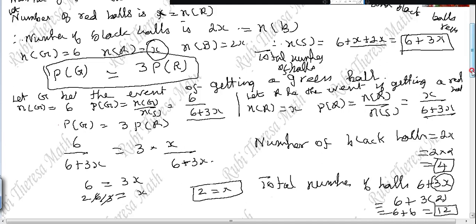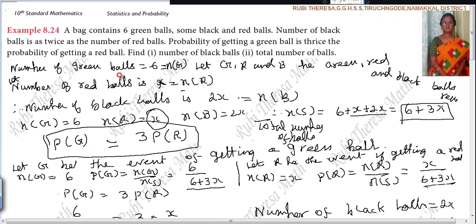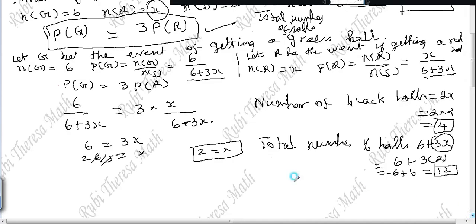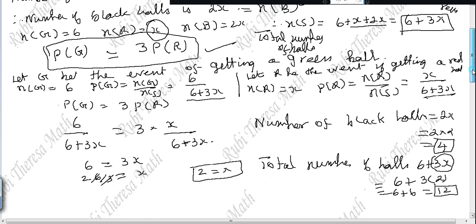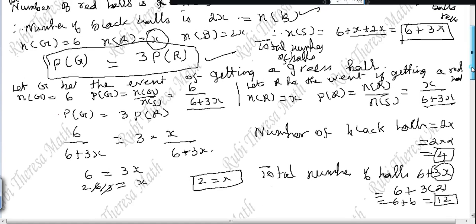Understand? Do you follow, everyone? I'm giving this in detail, but you can write it more concisely. Use the first steps and the given condition, and directly write the probability to solve the problem. According to your convenience, complete it within the time limit. Is it okay? Thank you.